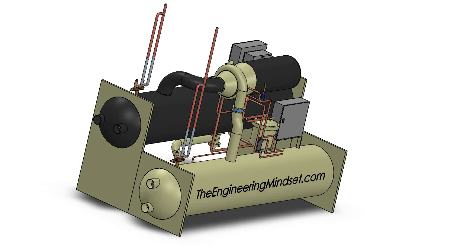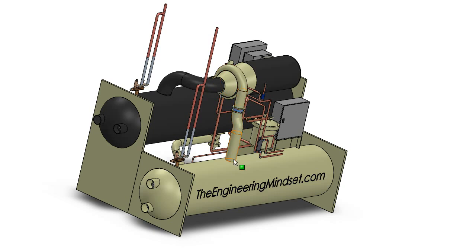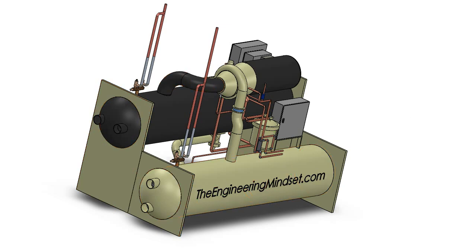From the other videos in this series on chillers, you should know by now that the refrigerant always flows from the evaporator into the suction line, through the compressor, down the discharge line, into the condenser. It does this so that the chiller can dump the unwanted heat collected from the building in the evaporator and move that into the condenser so it can be sent off to the cooling towers.